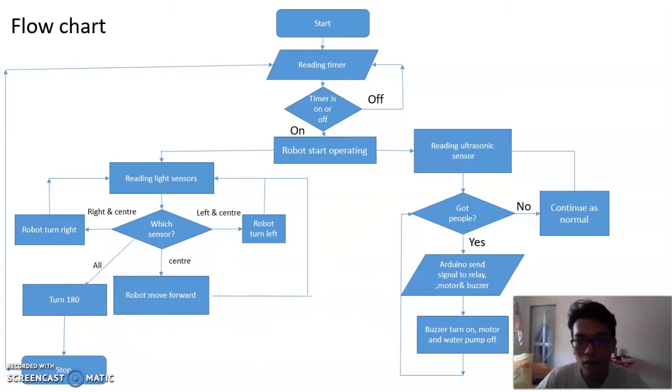Let's look at the right side. It's about the ultrasonic sensor. This sensor senses people in front of the robot or some cat or animal within one meter. If there's nothing in front of the robot, then the robot will continue as normal. If there are people, then the Arduino will send signal to relay, motor and buzzer. So the motor and the water pump will stop operation. And the buzzer will light on to alarm the people in front to tell them to go away or give way. Then if the people go away, you continue the operation.